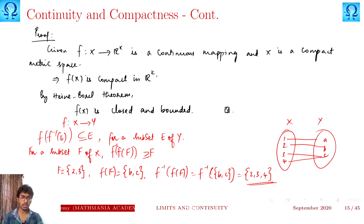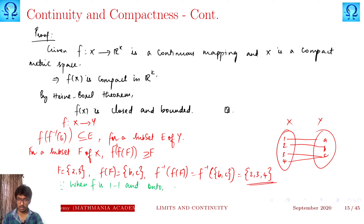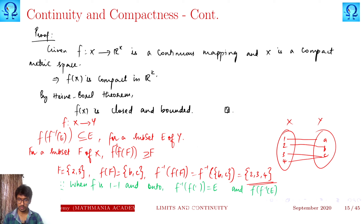Whenever you take a subset of Y, you can first find the inverse image and then find the image — that will be a subset of E. If you take a subset of X, the reverse inequality holds. Equality may not hold in both cases. In this example we do not have equality, but if you take {1,2} you will have equality — that holds when the function is one-one and onto.